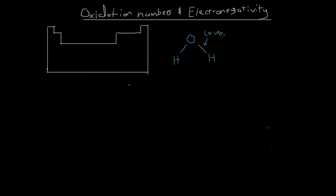Covalent bonds are just the sharing of two electrons. Because of that, we can redraw each of these bonds as two little dots to represent the two electrons - dot there, dot there, dot here, and a dot here, and a hydrogen there. So these covalent bonds are equivalent to a pair of electrons, because a covalent bond is basically the sharing of electrons between the atoms involved. Here the oxygen atom and the hydrogen atom are sharing electrons, and I've drawn these electrons here.